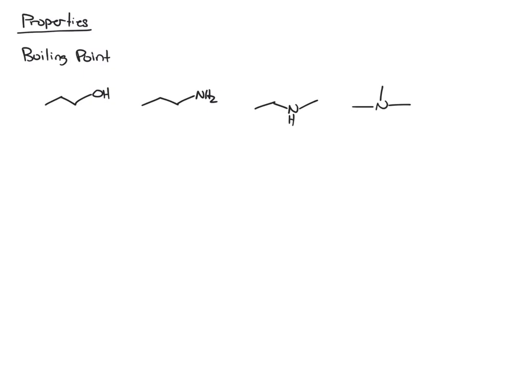For these molecules, the experimental boiling points: for the alcohol, 97 degrees Celsius, the primary amine, 48, the secondary, 37, and the tertiary, 3. Okay, now we want to explain this trend.